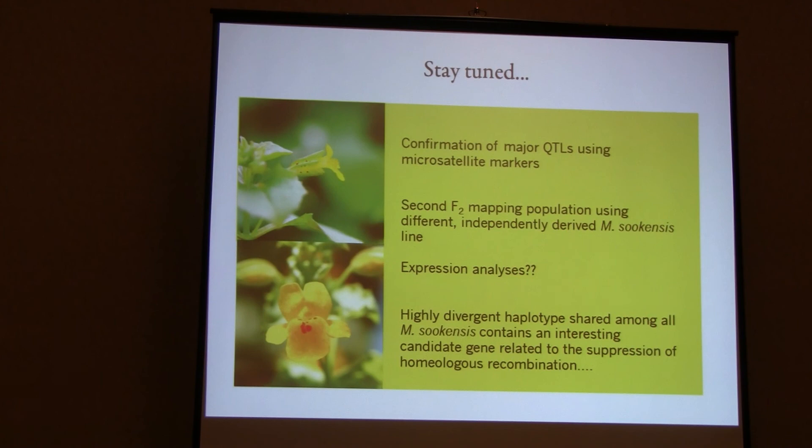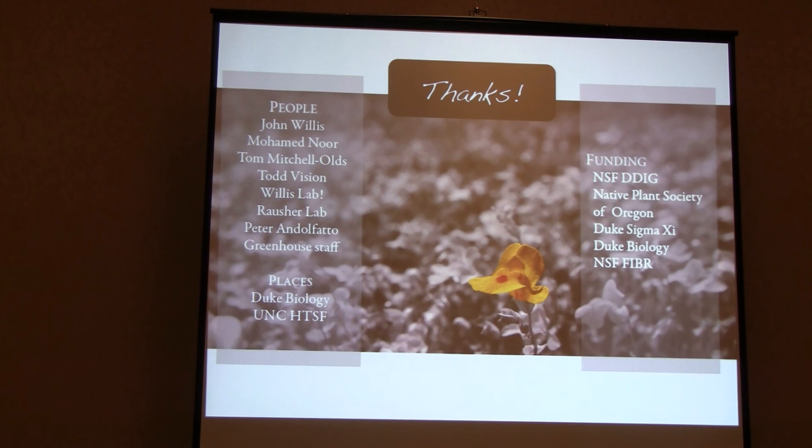Going forward, I'd like to confirm these large QTLs using microsatellite markers. I also have a second F2 mapping population already phenotyped, and I could confirm these QTLs using microsatellite markers rather than redoing the full genotyping. And there's that interesting MSH7 region I'd like to explore more. With that I'd like to thank everyone, including Mohammed for arranging all of this.